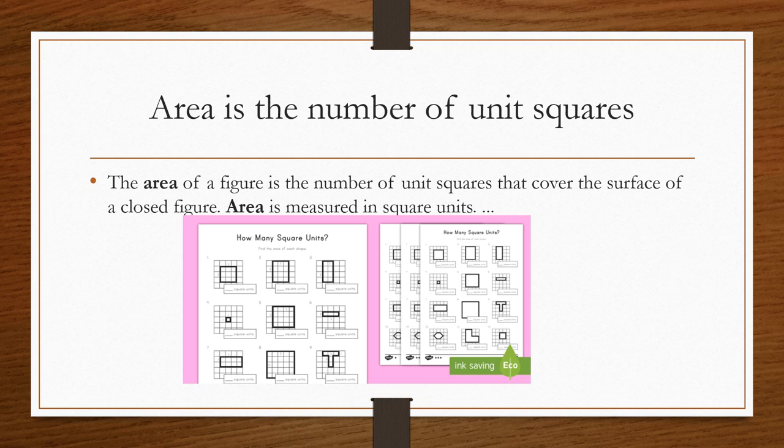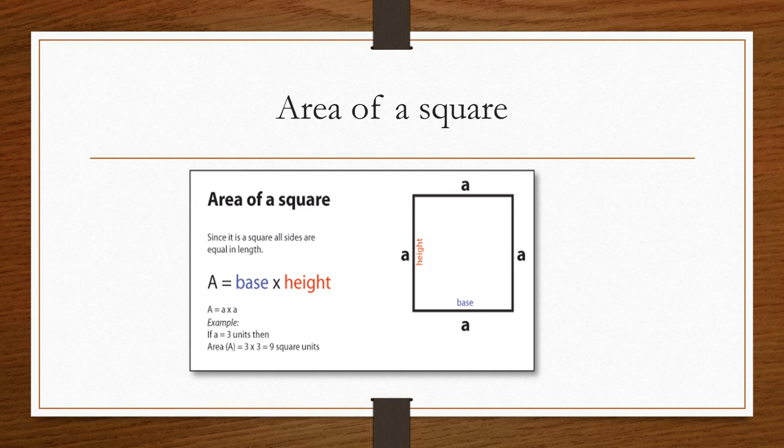So there is a formula to calculate the area of different polygons. For a square, which is the simplest, the formula is a into a or a squared. Here, a is the base or the height. As you all know, the square has the same base and height, which is denoted here by the alphabet a. Suppose a is 3 units, then the area of the square would be 3 into 3, which is 9 square units. That is, it would occupy 9 unit squares.